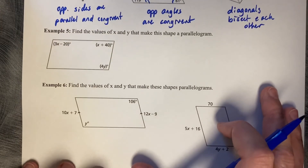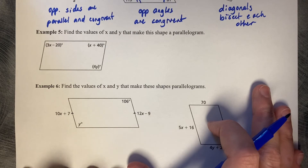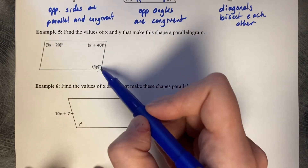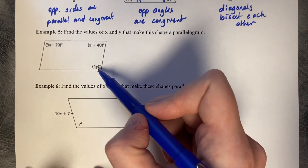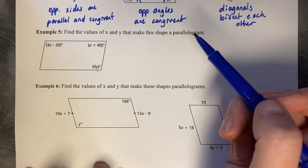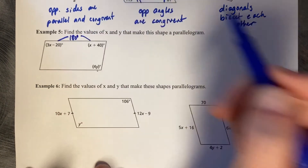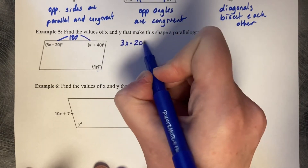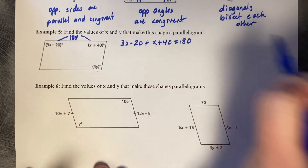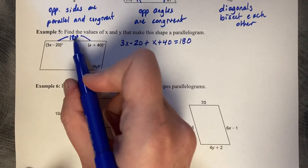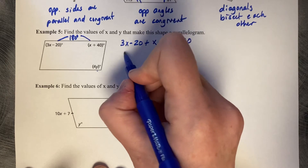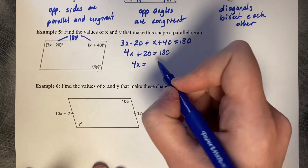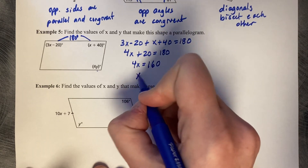Find the values of x and y that make this shape a parallelogram. We want opposite angles to be congruent, but this angle has x and that one has y — so use consecutive angles being supplementary instead: 3x minus 20 plus x plus 40 equals 180. That gives 4x plus 20 equals 180; subtract 20 to get 4x equals 160; divide by 4 and x equals 40.